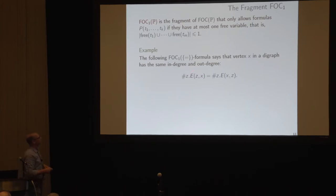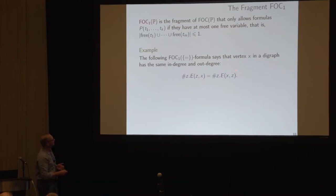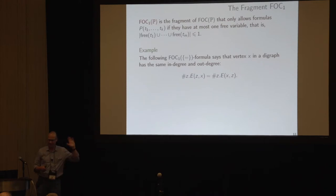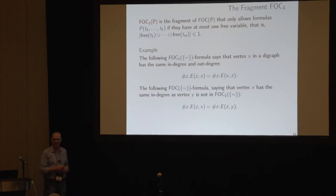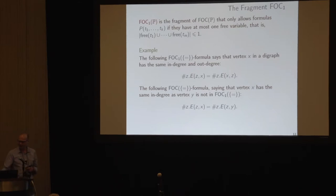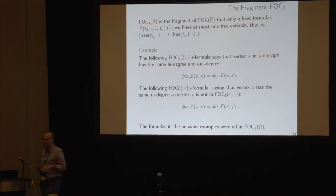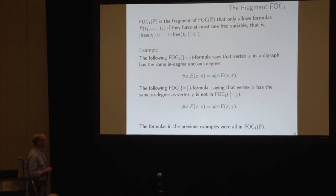For example, a formula saying 'in a directed graph, the in-degree of x is the same as its out-degree' is allowed: we have two counting terms related by equality, both with the same free variable x. But a formula saying 'x and y have the same in-degree' is not allowed, because that's a counting formula with two free variables x and y — and that's exactly what we needed in the counterexample. The fragment FOC1 can still express a lot of useful things, so it's a reasonable fragment to look at.